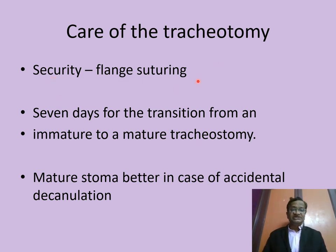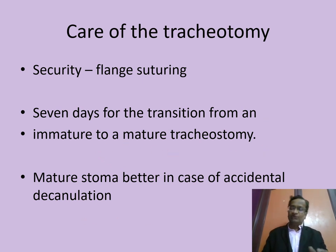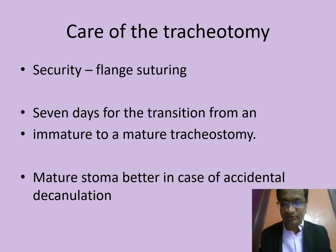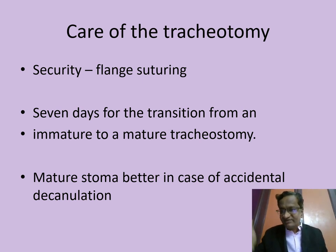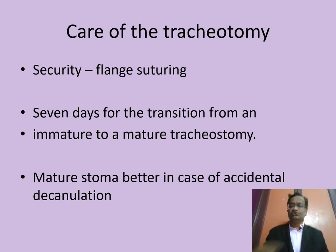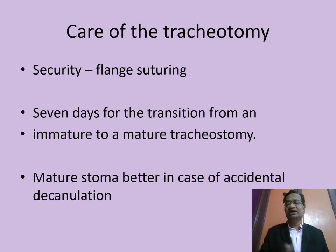Security of the flange with suturing should be maintained for seven days, from the transition of an immature to a mature tracheostomy stoma. If the tube comes out in the first few days, reinsertion is very difficult because the stoma is immature. After seven days, the stoma is stable and mature — if the tube accidentally comes out, the pathway is clear and the tube can be reinserted.